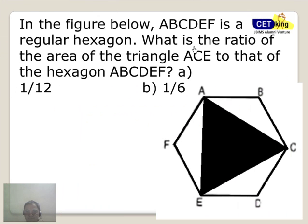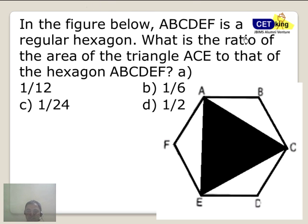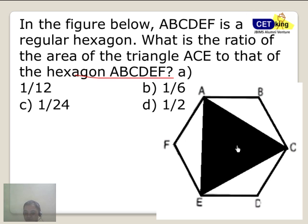Alright. So let's look at the first question. Please pause the video and try to do it yourself. In this case, we are looking at the ratio of the area of triangle ABC to that of the hexagon. Can you try to draw yourself, break the thing into parts? Now, where to draw the parts? You have to tell me.